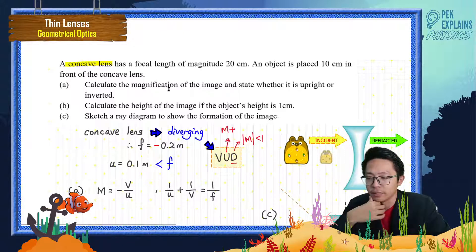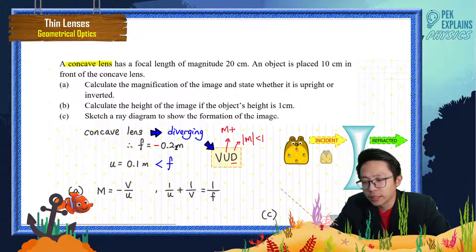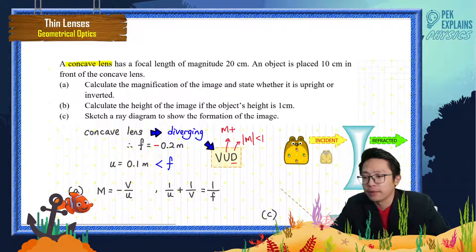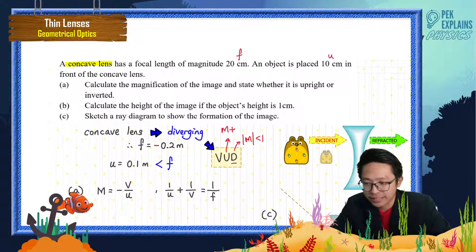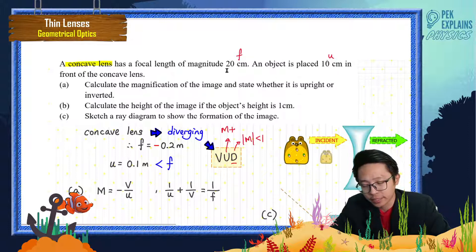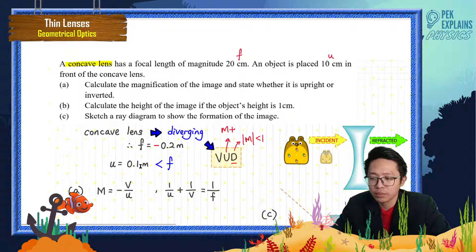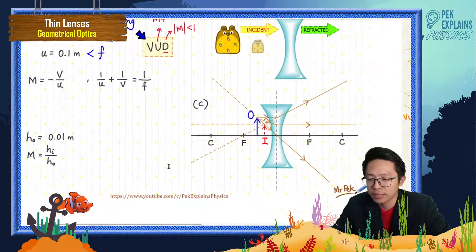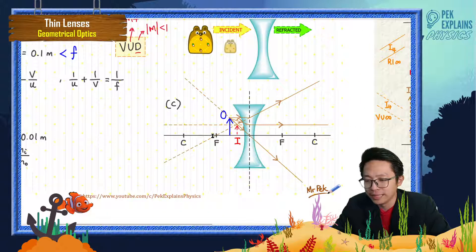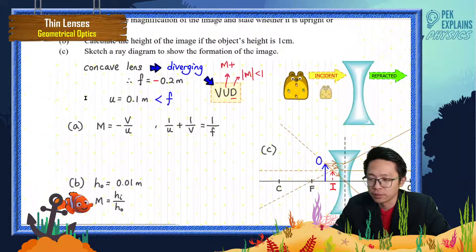So the focal length is negative because it's diverging. The object distance is 10 cm. Since 10 cm is less than the focal length of 20 cm, the object is placed between the lens and the focal point. The last part of the question asks you to draw a ray diagram showing the object placed less than the focal length from the lens.